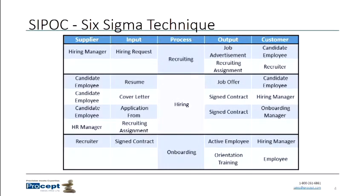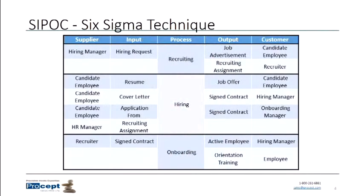What SIPOC allows us to do is to define processes very well. As we go through this SIPOC definition, we ask: who are the suppliers of the process? Who are the people, organizations, partners, companies — whoever it might be — that are providing inputs into our process? We identify them as suppliers to the process. What inputs do they provide? What are the things we need to get this process started? Those could be materials, information, work in progress, a transaction — really any physical thing or information that goes into making this process happen. Those inputs are provided by the suppliers.